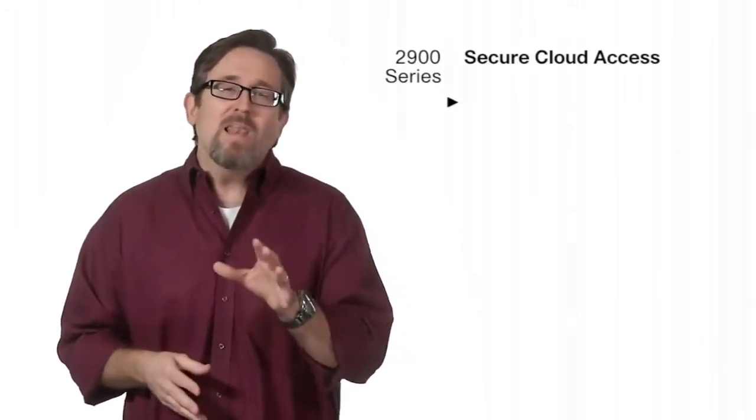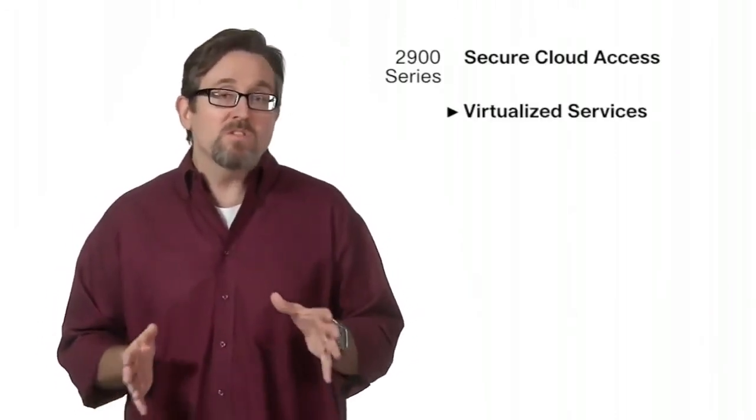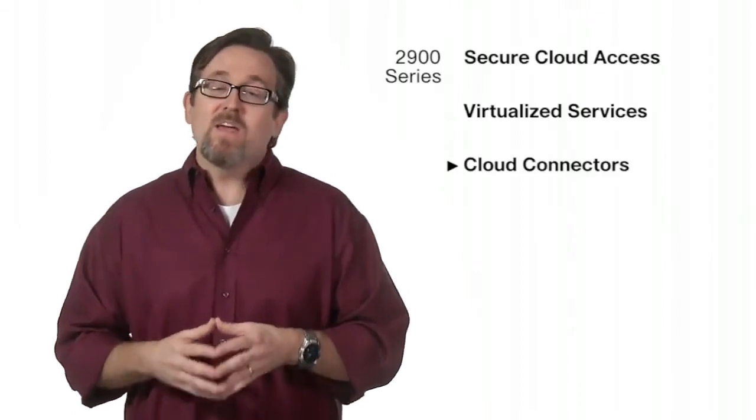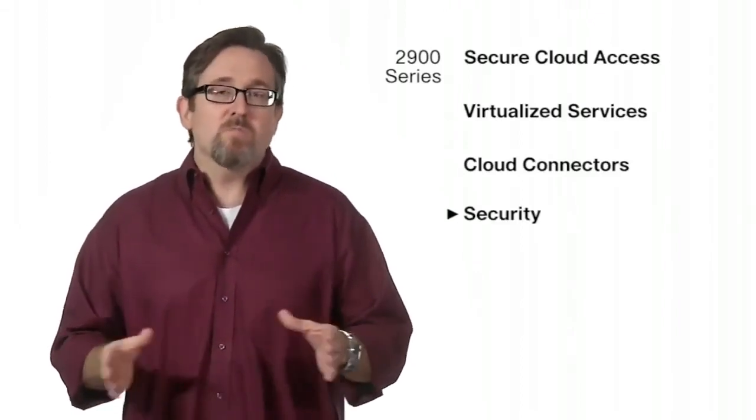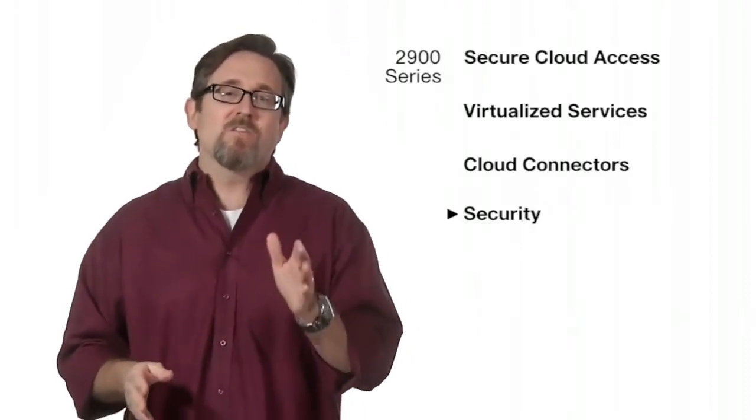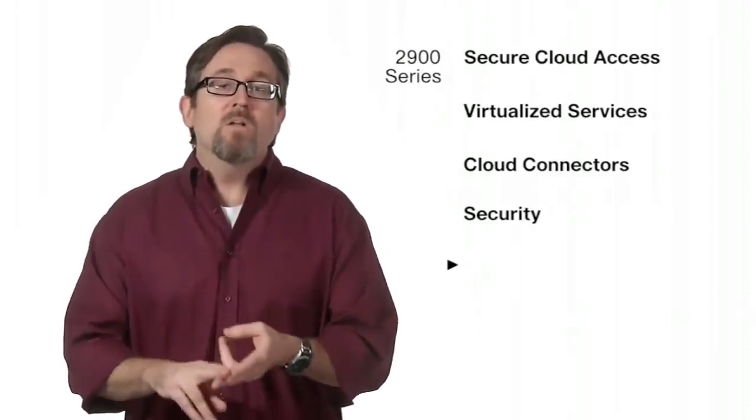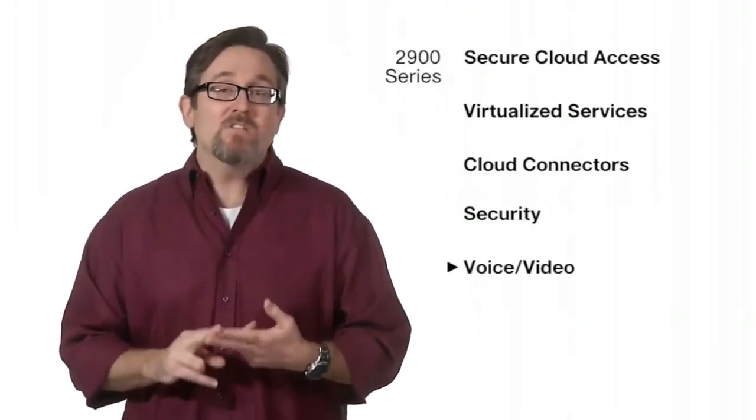The entire 2900 series family is a foundational platform for secure access to the cloud by leveraging the latest virtualized service delivery and cloud connectors that can enhance or enable cloud services. Keenly focused on branch office productivity, this entire series offers comprehensive security, multimedia collaboration, and advanced services all wrapped up in a consolidated form factor that simplifies management and lowers operational costs.